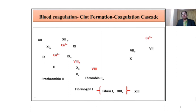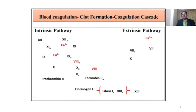The blood is transformed into a solid gel at the site of vessel damage. This reaction occurs in a cascade manner, hence it is called the coagulation cascade. There are two pathways for blood coagulation: the intrinsic pathway and the extrinsic pathway. Let us begin with the first pathway, that is the intrinsic pathway.